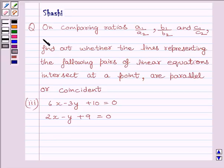The question is, on comparing the ratios a₁ upon a₂, b₁ upon b₂, and c₁ upon c₂, find out whether the lines representing the following pairs of linear equations intersect at a point, are parallel, or coincident.